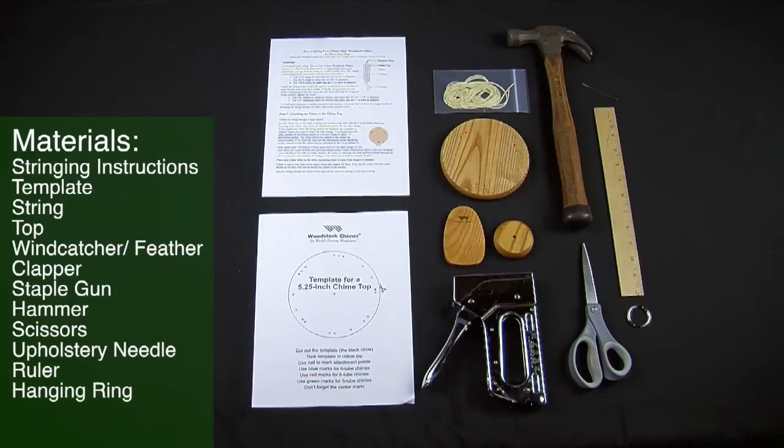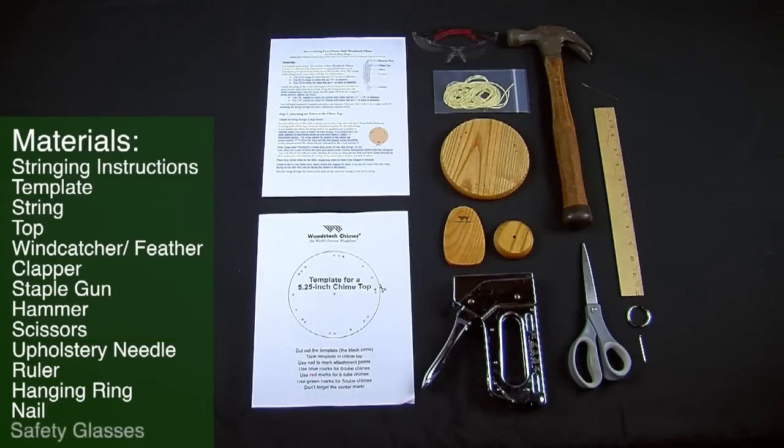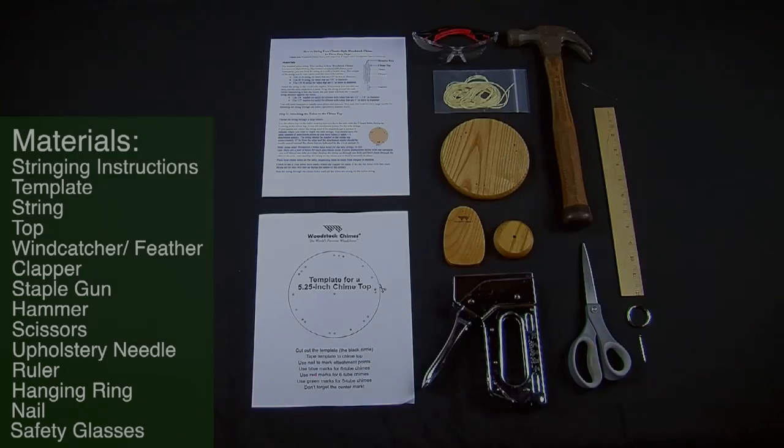A hanging ring. You can reuse the one you have or purchase one from your local hardware store. A common mistake is to use a key ring, but they have a rough edge that could cause your string to break. A nail for use with the template. We'll explain this later in the video. And last but not least, don't forget your safety glasses.